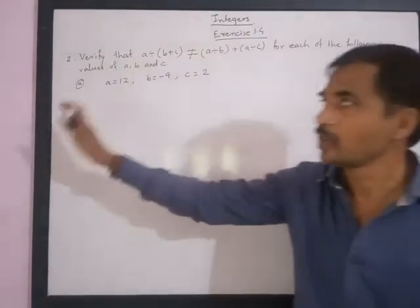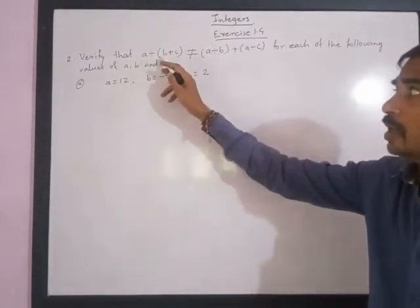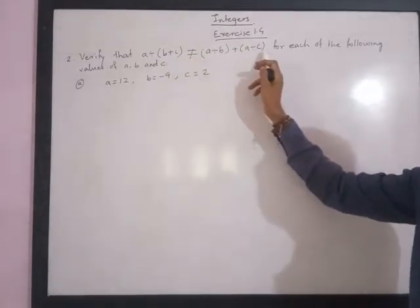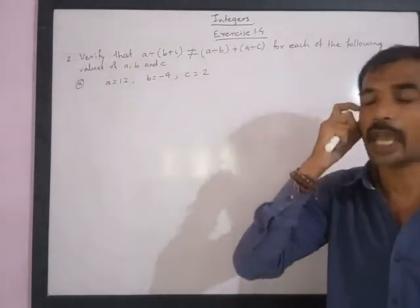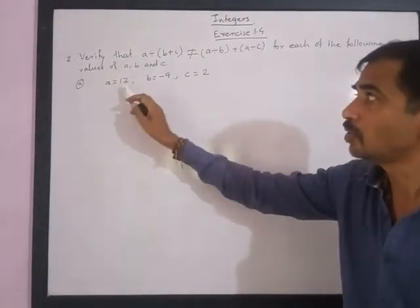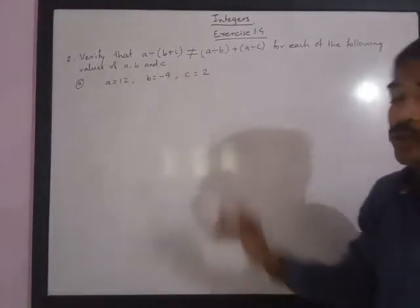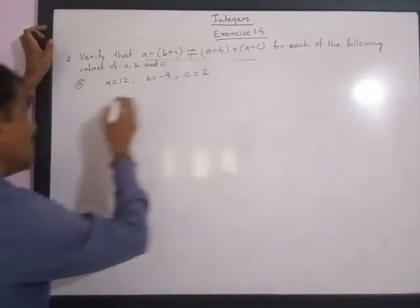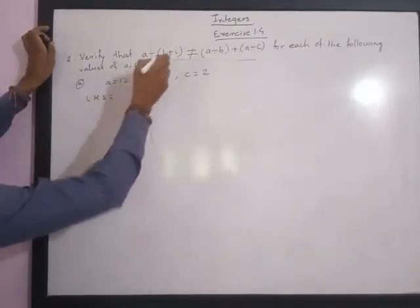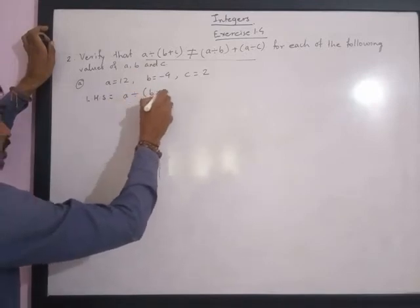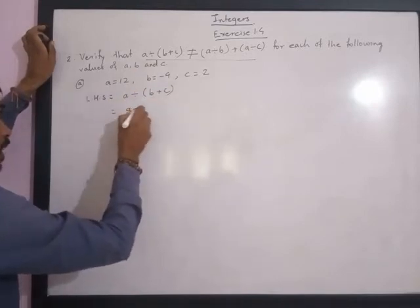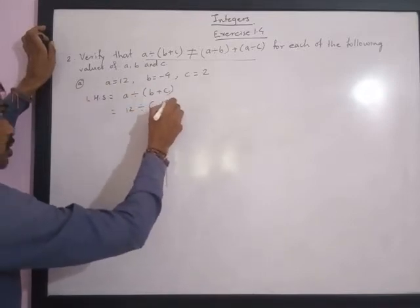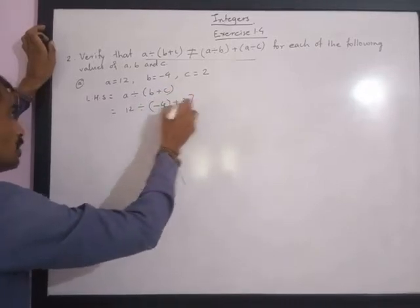In Exercise 1.4, the second question is: verify that a divided by bracket b plus c is not equal to a divided by b plus a divided by c, for each of the following values of a, b, and c. Here, a is equal to 12, b is equal to negative 4, and c is equal to 2. Let us consider the left hand side.